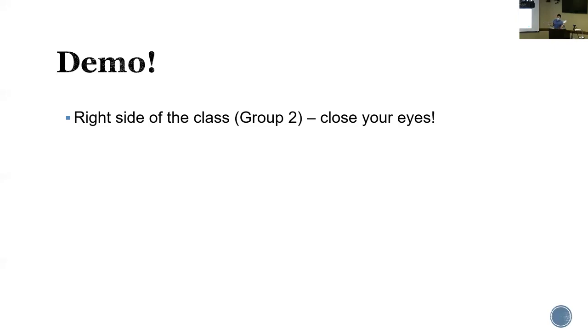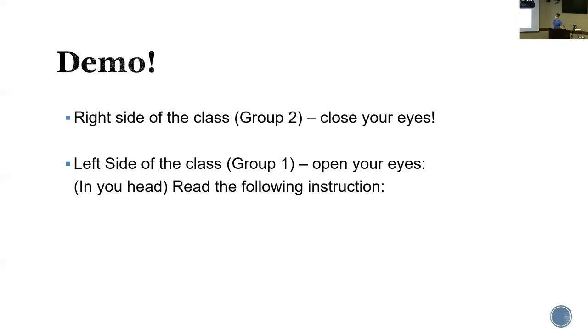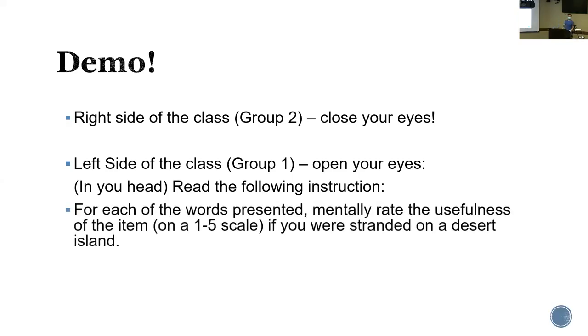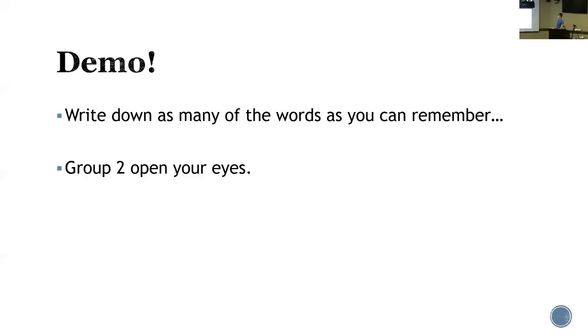Okay, for group two, take a couple seconds to write down your answers. Once you're done, close your eyes. Group one, you can open your eyes now. For group one, read the instructions in your head. Once you've got it, give me a thumbs up. Group two, you can open your eyes now — we're going to wait for group one to write down their answers.